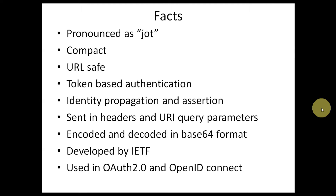JWT is used as a token for authentication, so it can be used as token-based authentication. It is also used for propagating identity and assertions between two parties. Basically JWT is sent over the wire encoded in base64 format, so if you want to secure it you have to use JWS or JWE. It is developed by IETF and is used extensively in OAuth 2.0 and OpenID Connect.